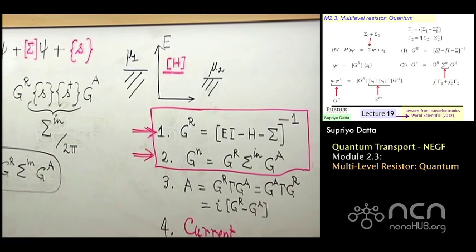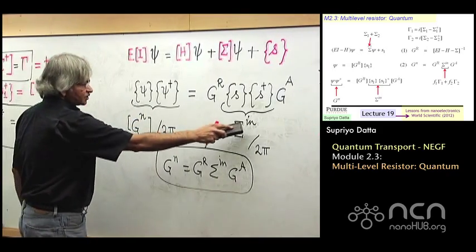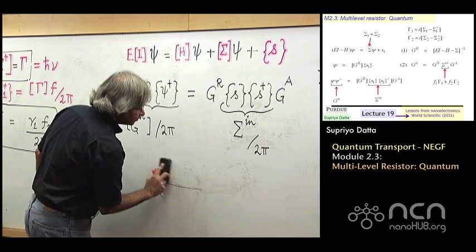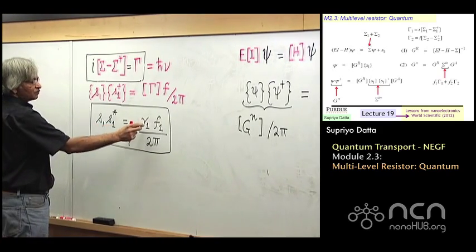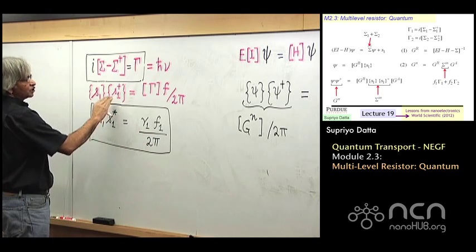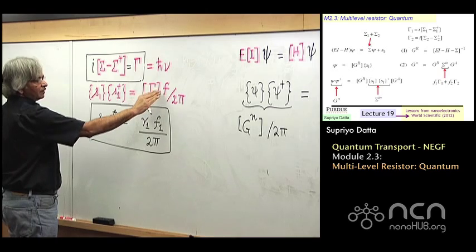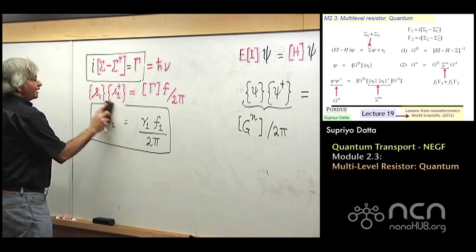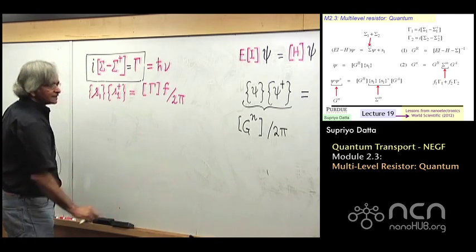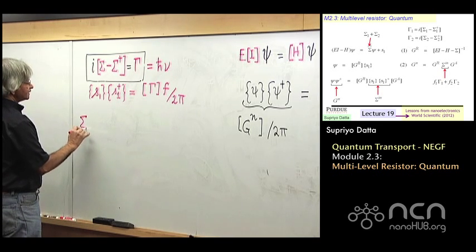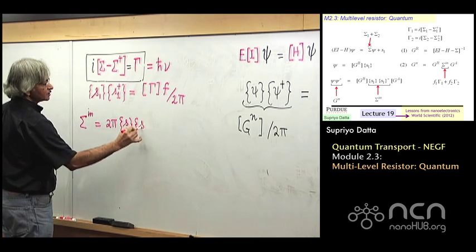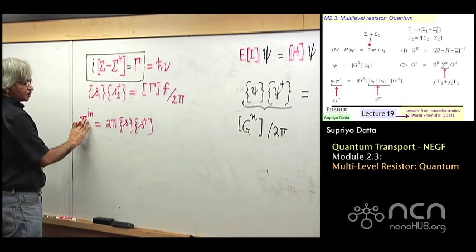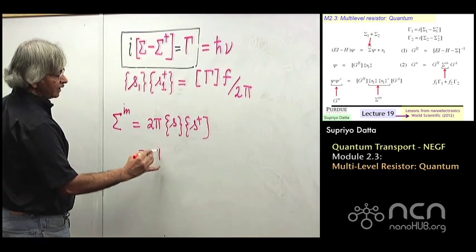Now, what I want to talk a little more about is about the strength of this sigma n, strength of the source, that if you look back here, remember that in the one level thing, we had argued that the strength of the source would be gamma 1 F1 over 2 pi, and the matrix version was something like this, S1, S1 dagger is gamma F over 2 pi. And so, what we defined as sigma n, that is like 2 pi, S, S star, S, S dagger, because, as you remember, S, S dagger is what we call sigma n over 2 pi, and so the sigma n is kind of like gamma times F.